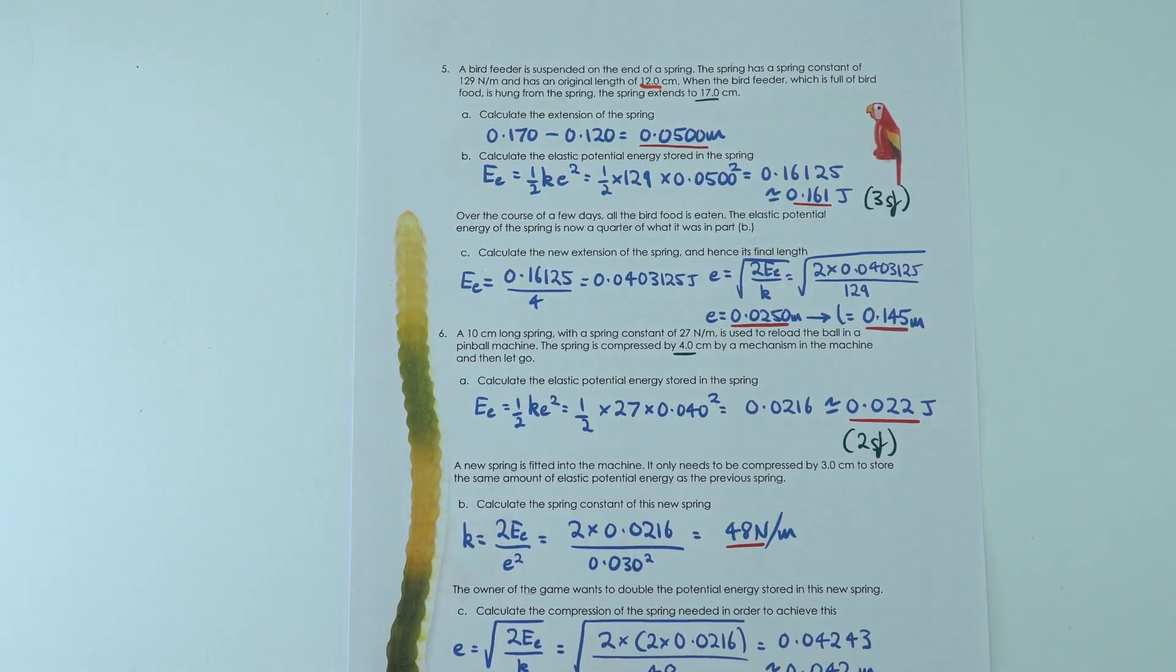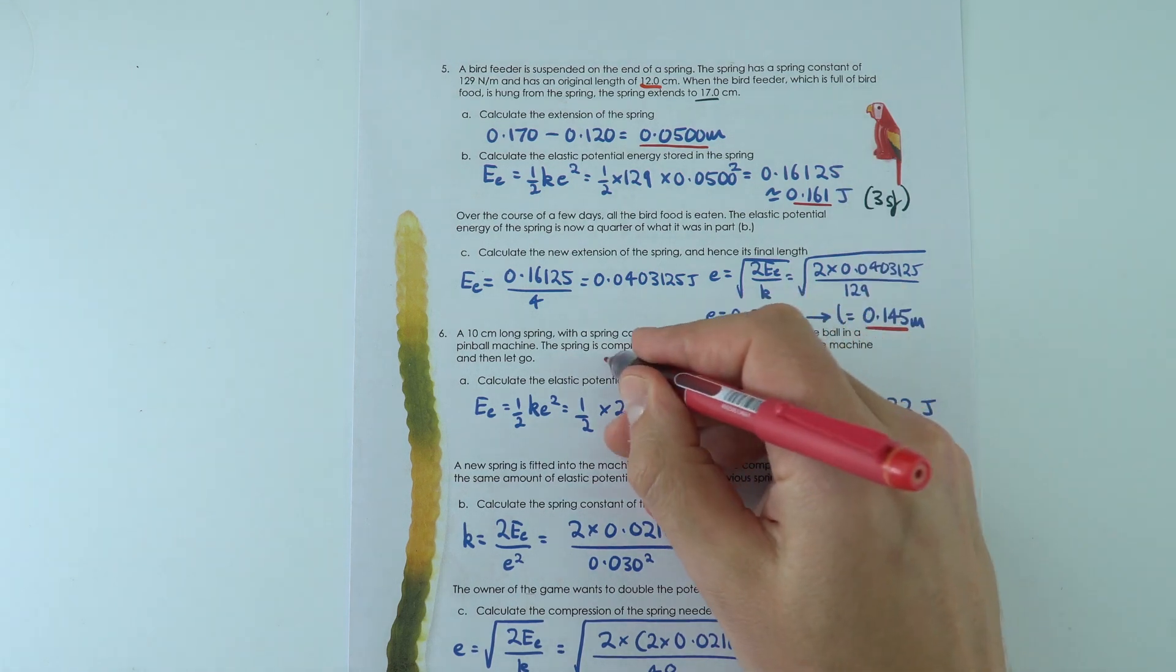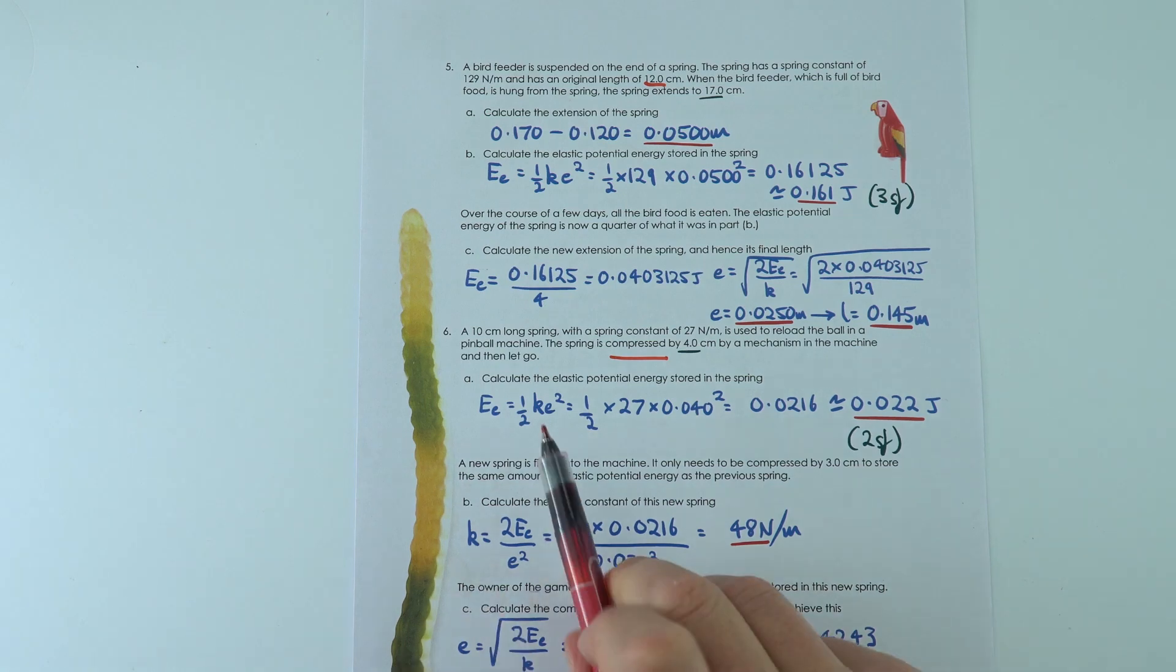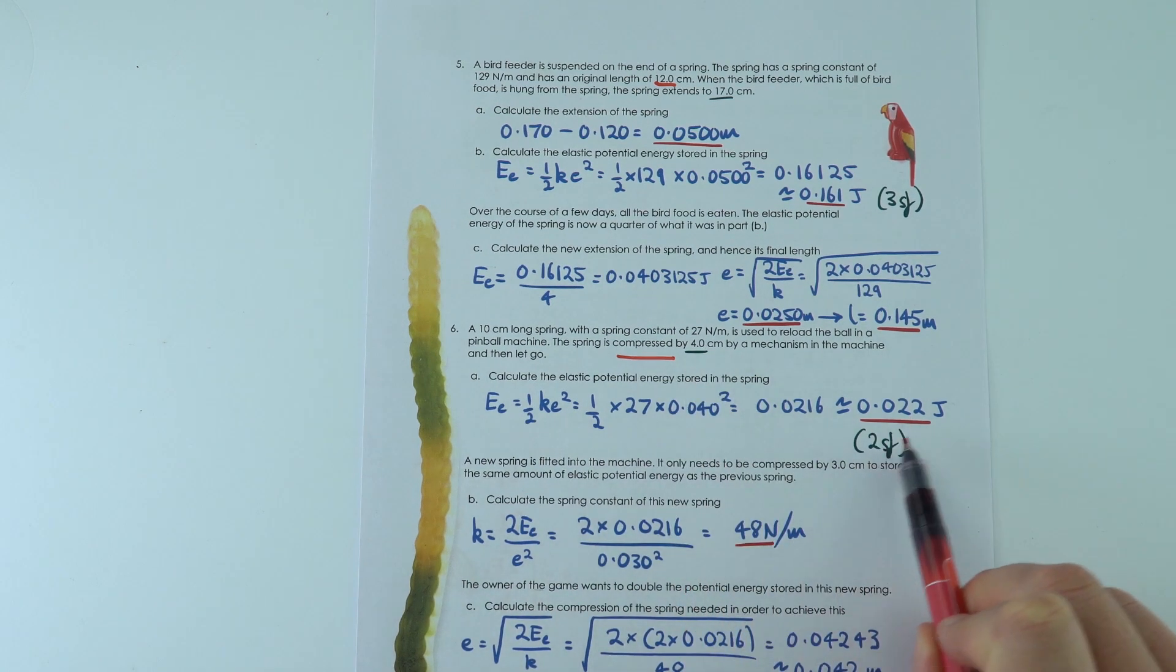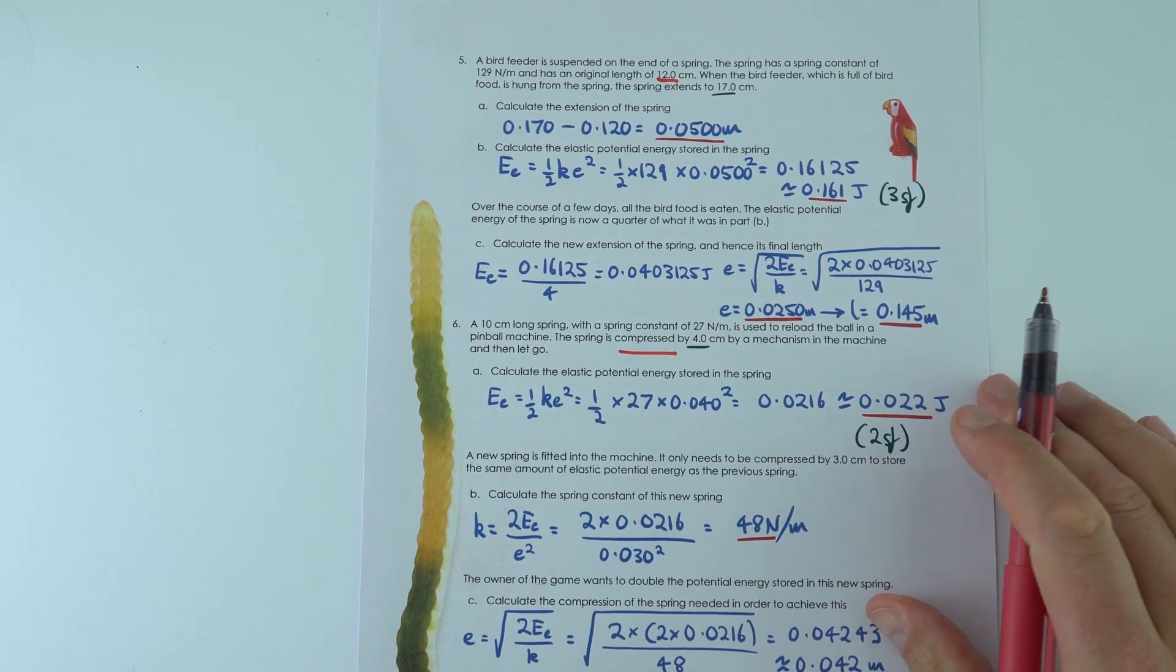Number six, we've now got a different spring. And this one is a spring being compressed. Even though it's compressed, which means it's made shorter, we're going to use the same equation. So again, this is the equation. That's the data from in the question, which I've put in to get a value of 0.022 joules.